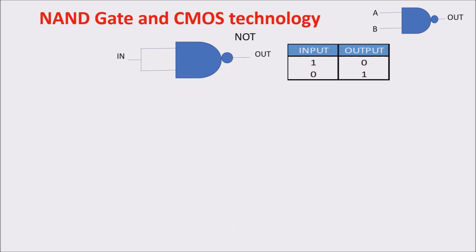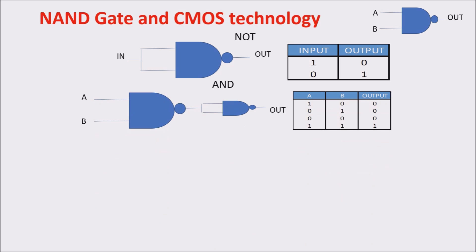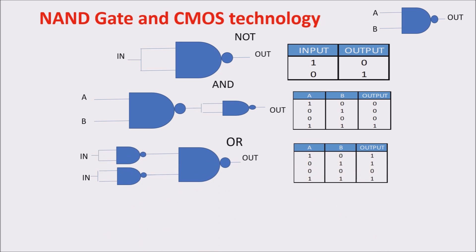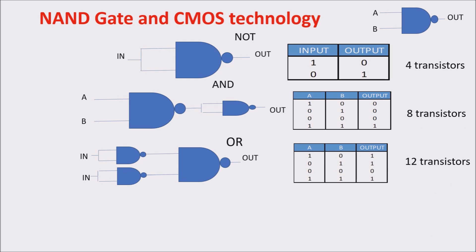For example, you can build the NOT gate by connecting the inputs of the NAND, and you can build the AND gate by adding a NOT to the output of a NAND. You can also build an OR gate, and so on. But using this approach, you would need 4 transistors for a NOT, 8 for an AND gate, and 12 for an OR. Definitely too many. In electronics, you have to be prudent with transistors, so we prefer to use as few transistors as possible.